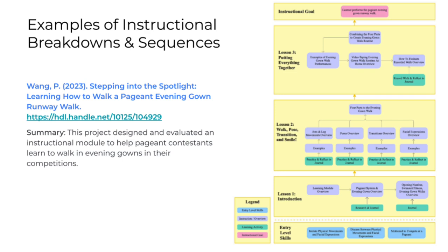Here is an example from Priscilla Wang and her project related to runway walks and pageant evening gowns. She had a legend with color coding and entry-level skills defined at the bottom. She broke her content into three lessons: lesson one was an introduction covering three primary topics with specified learning activities; lesson two introduced four different topics; and lesson three introduced four new topics and subtopics. All of these together led to the terminal objective: the learner is able to perform the pageant evening gown runway walk.